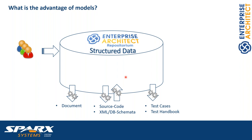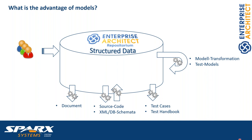We can generate other kinds of structured text as well. What we're dealing with here are model-to-text transformations. But Enterprise Architect also provides the possibility for model-to-model transformations. Following the OMG's MDA — model-driven architecture — approach, we can go from a more abstract platform-independent model to a platform-specific model, and then generate source code, schema, or whatever from the platform-specific model.